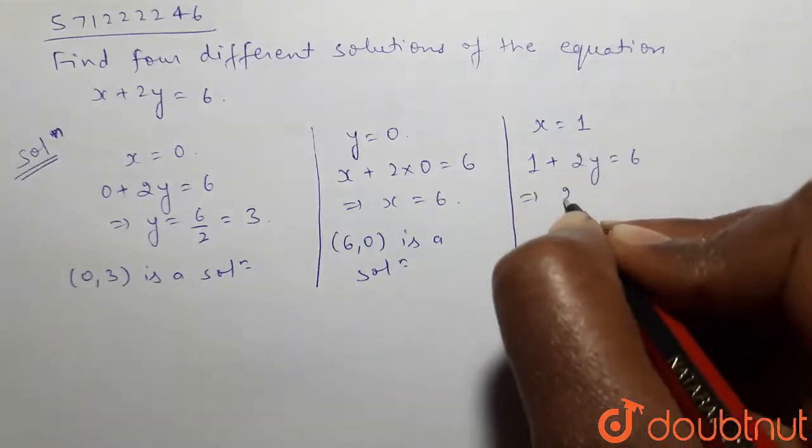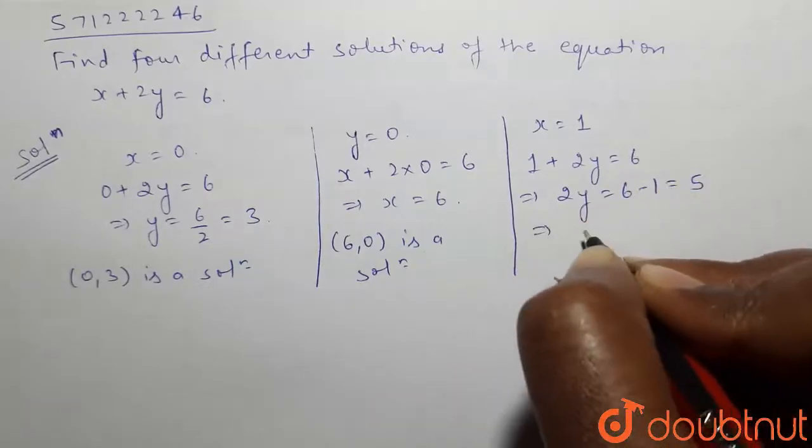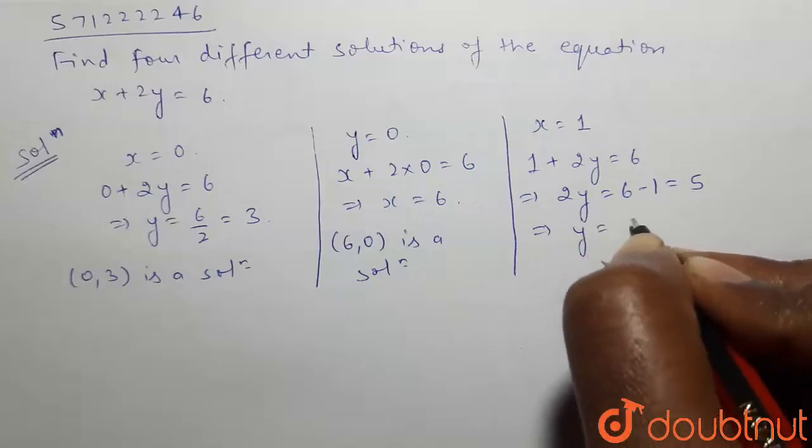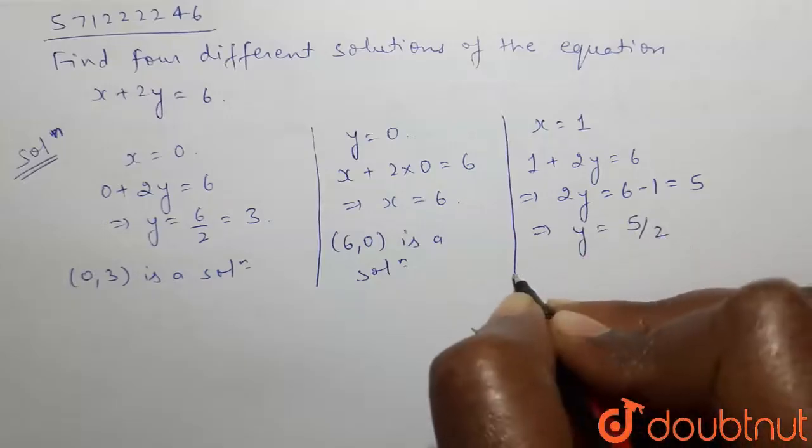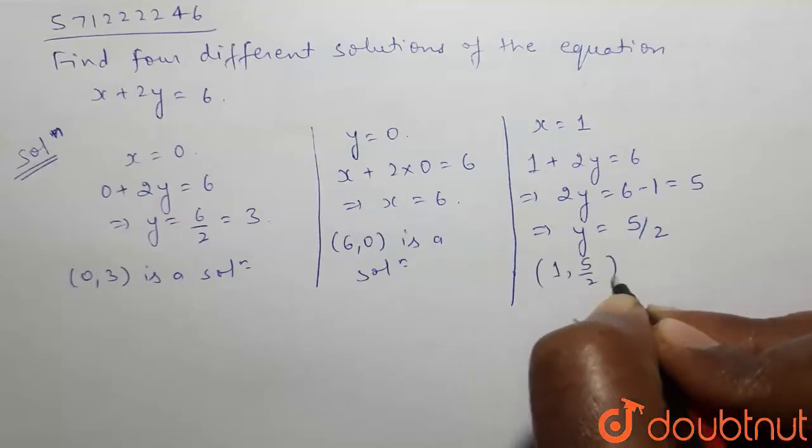This gives 2y equals to 6 minus 1, which is equal to 5, and y equals to 5 by 2. So, (1, 5/2) is a solution.